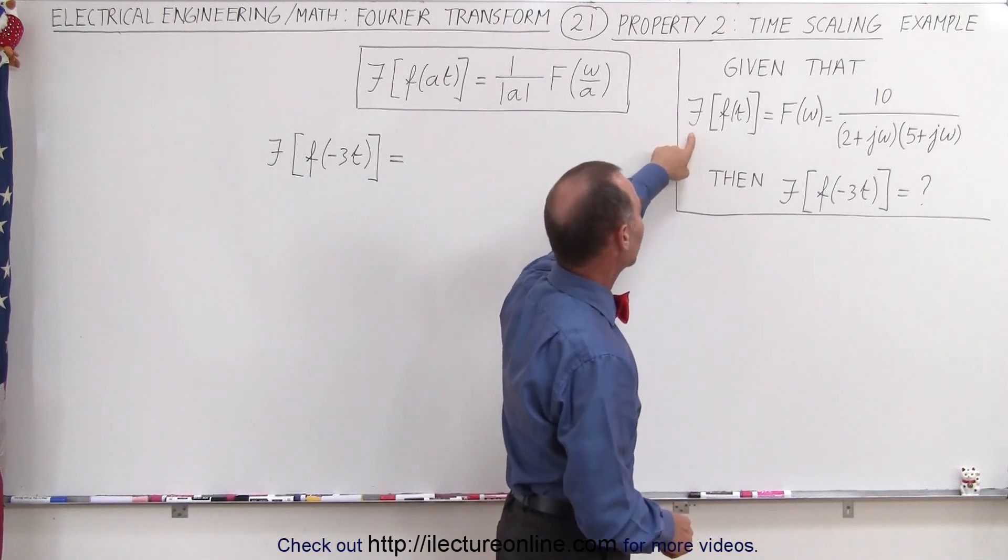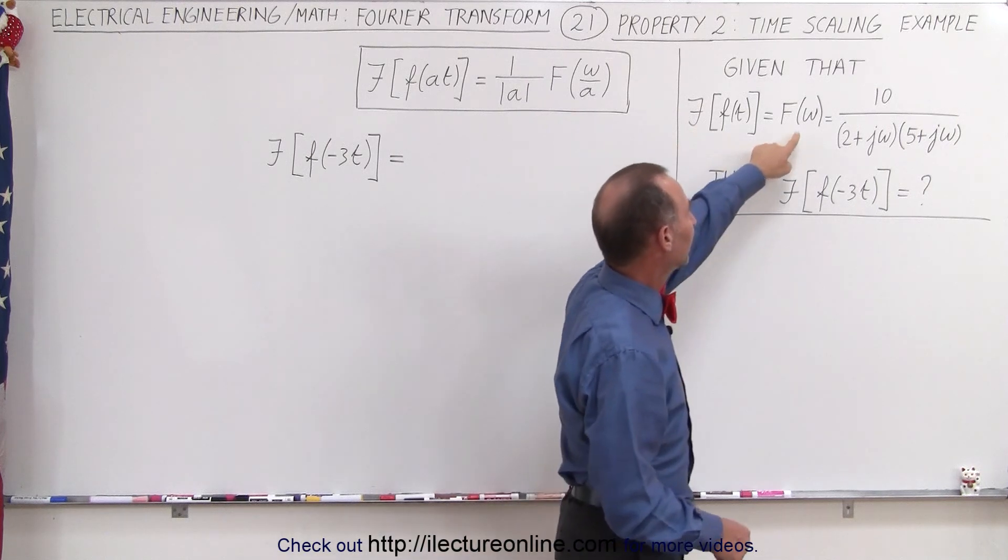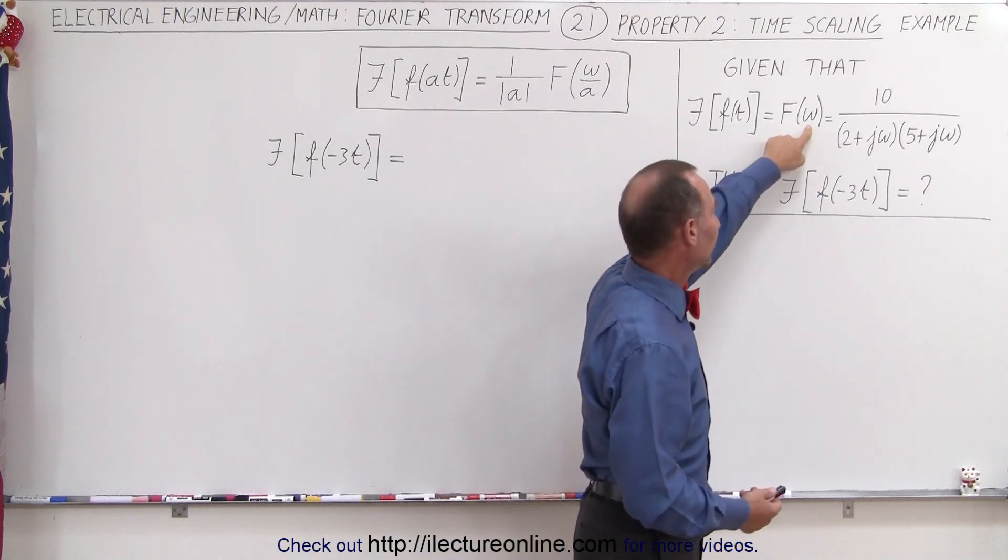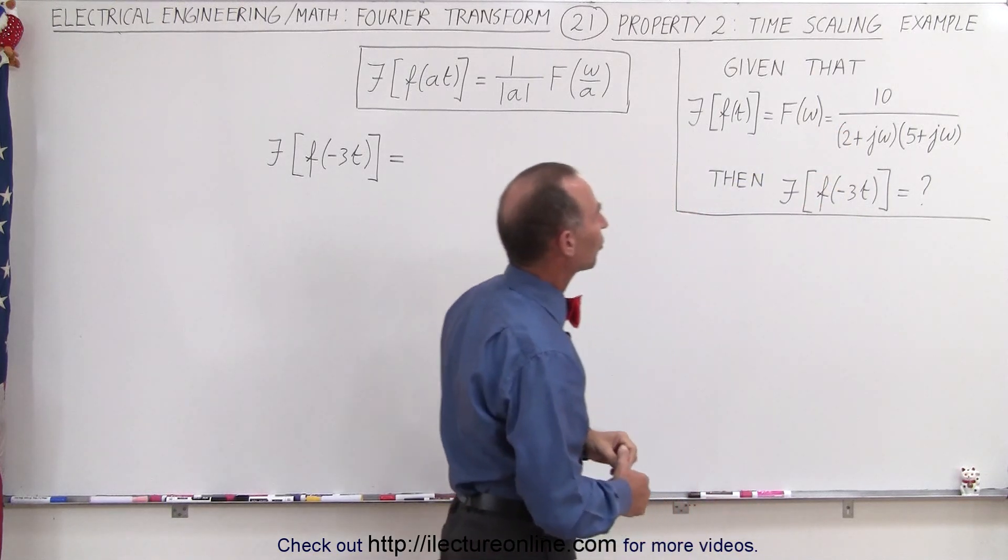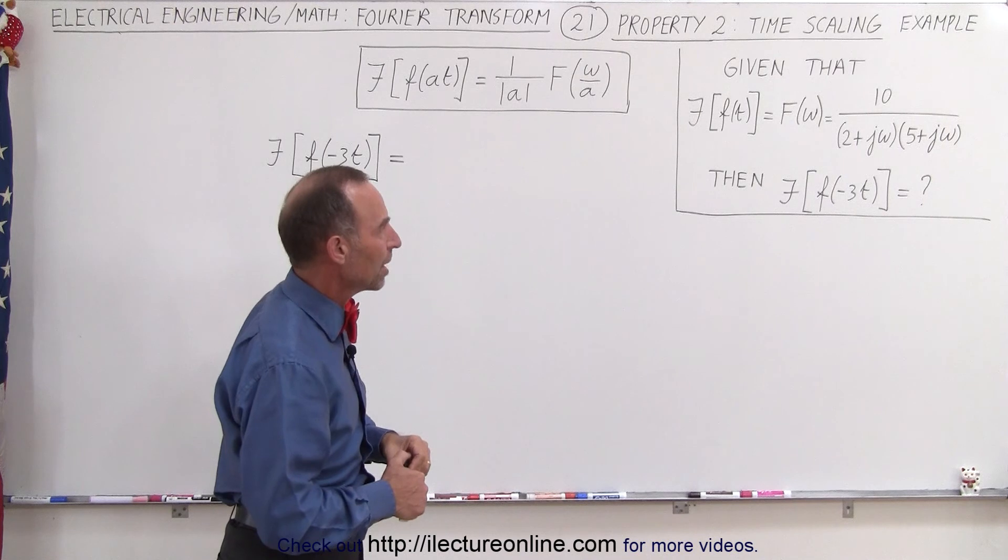Given that the Fourier transform of some input function equals the Fourier transform in the frequency domain which is equal to 10 over the quantity 2 plus j omega times 5 plus j omega.